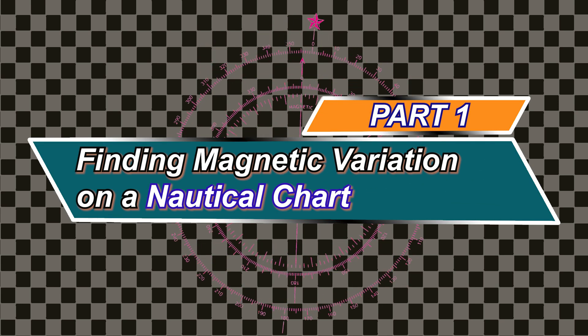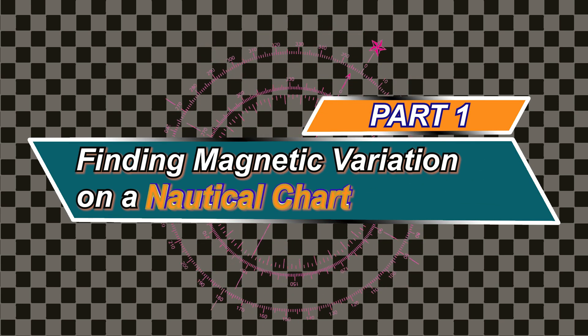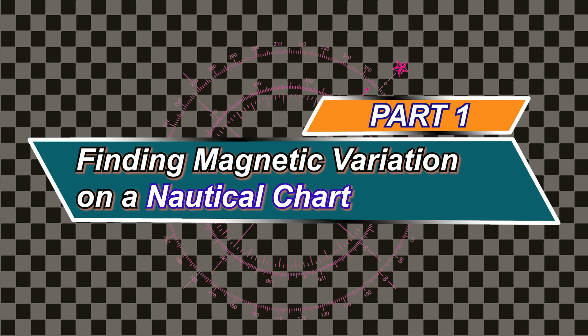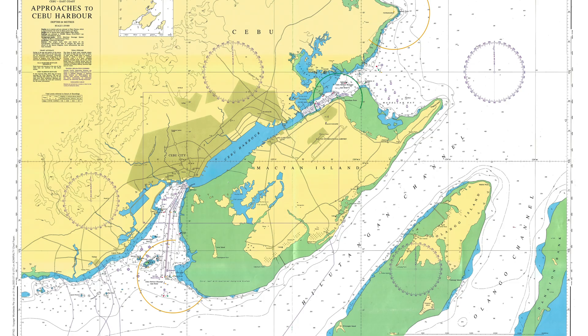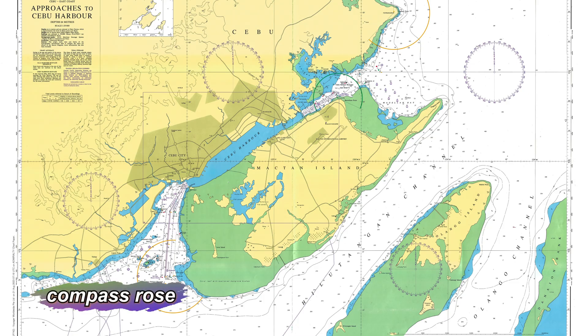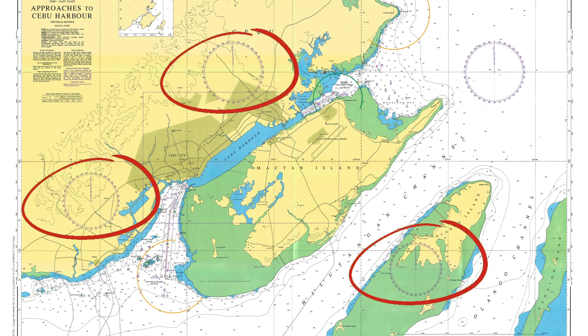Part 1: Finding Magnetic Variation on a Nautical Chart. To find magnetic variation on a nautical chart, look for the compass rose. It's usually printed in open water areas or near the chart's edge.